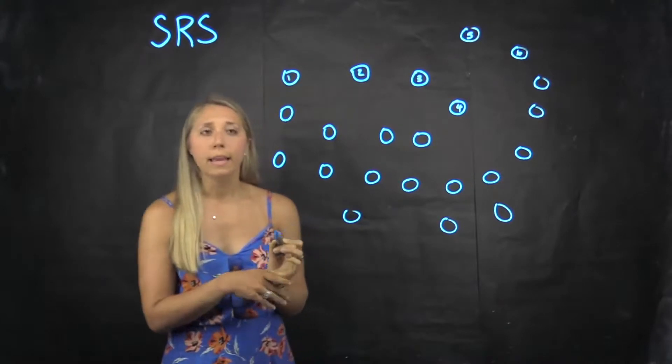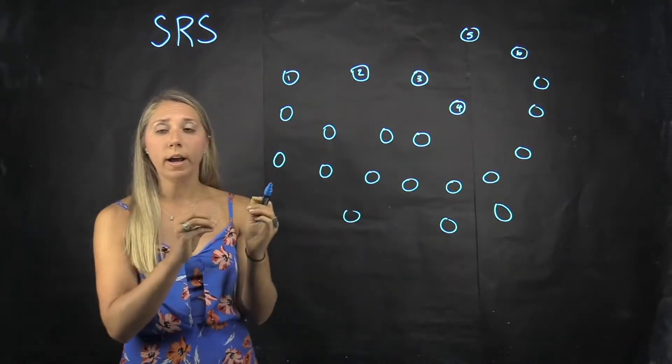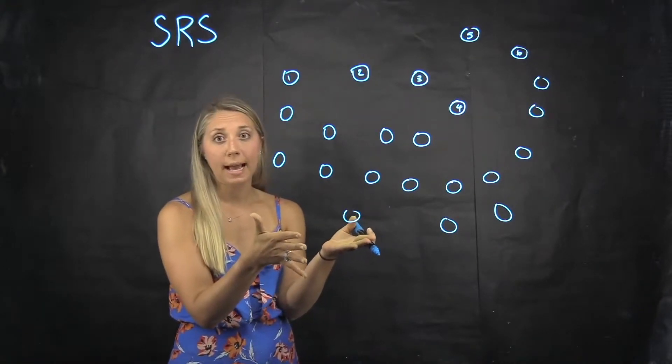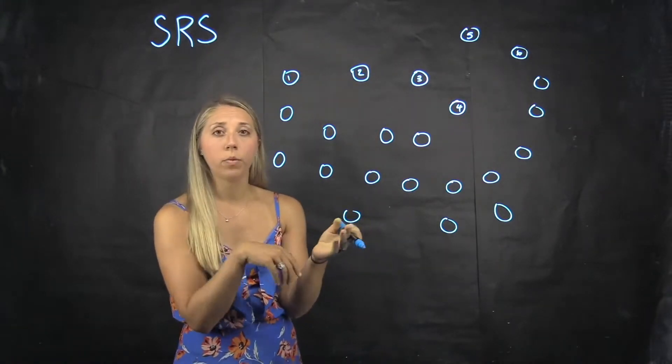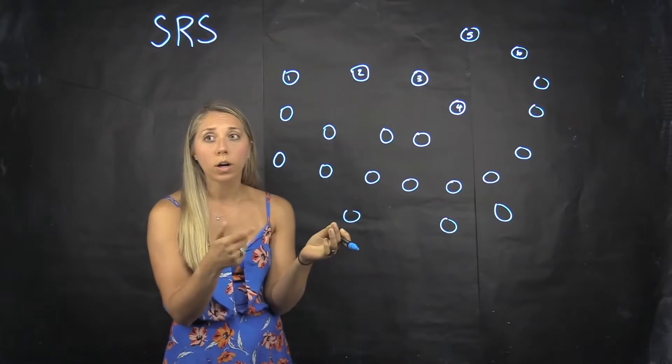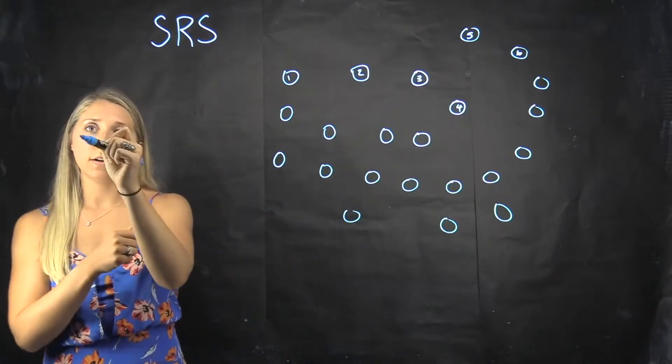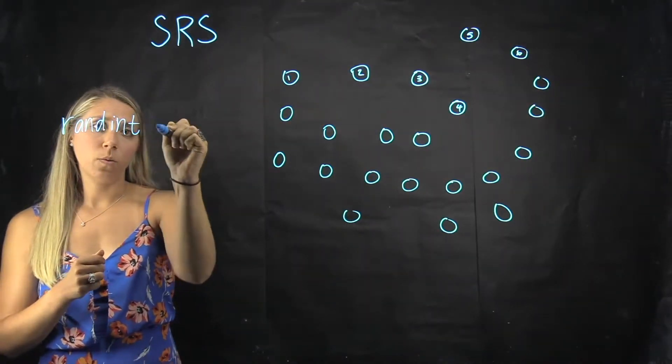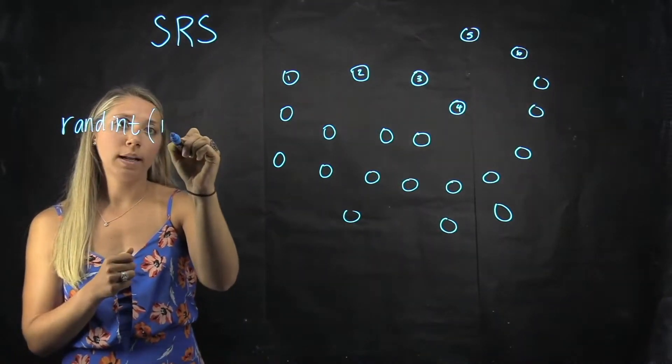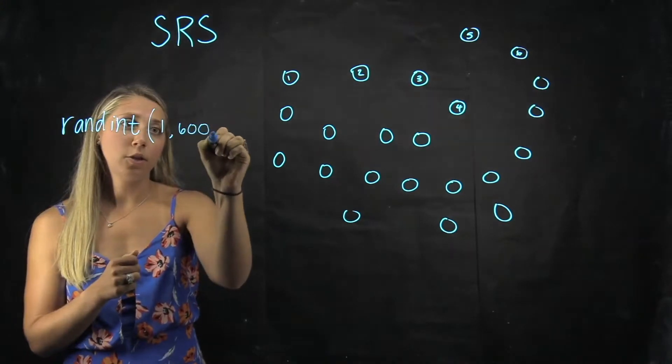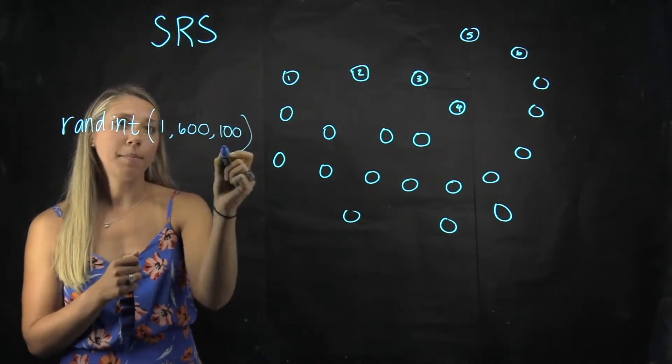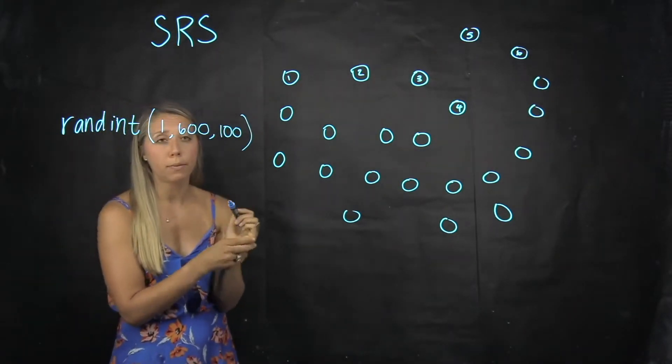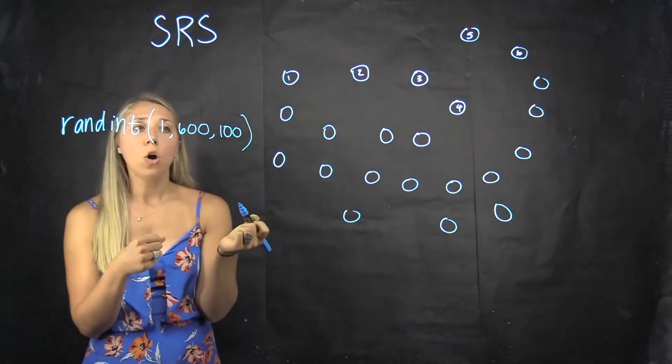At that point, if we wanted to select 100 of them, you have a few options. You could put all of those 600 numbers in a hat and randomly pull out 100 of them. Or you could use your calculator function randint, which if we have 1 comma 600 and you want 100 of them—so there's your lower bound, your upper bound, and the number you want—that would spit out 100 numbers.